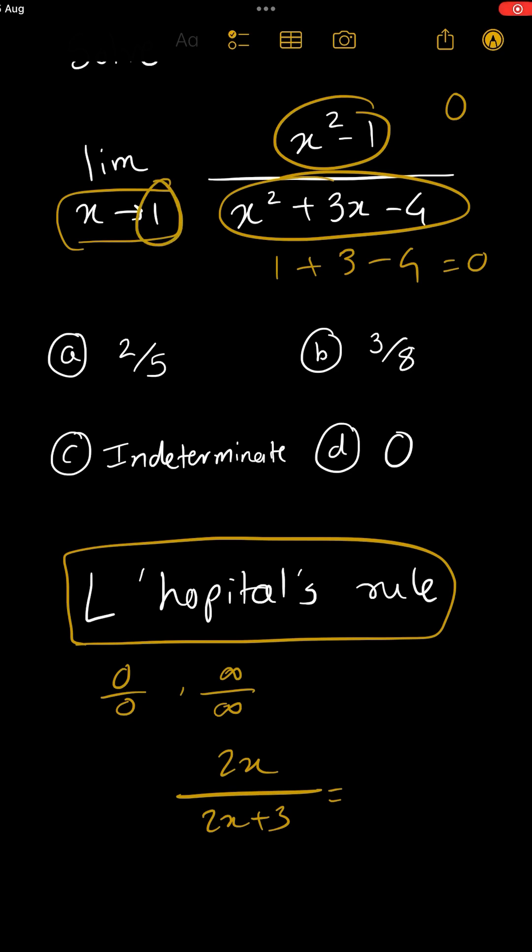Now just put x as one in that from here. So two into one is two upon two plus three is five, two by five. That's our answer, option A. That's it.